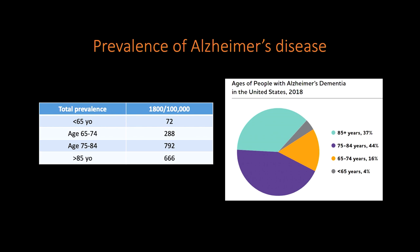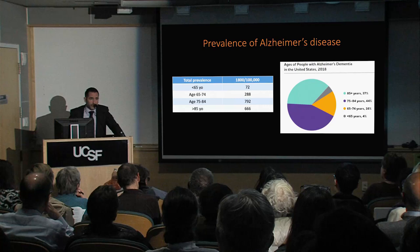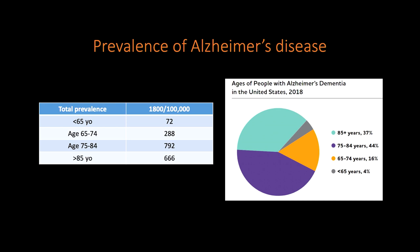You've all been exposed to the numbers for the Alzheimer's disease epidemic. The prevalence of Alzheimer's disease right now is about 1,800 per 100,000 people — approximately 5.8 million in the United States. This is probably an underestimate because many people never receive a formal diagnosis. The prevalence varies across the lifespan: in people under 65, only about 72 per 100,000; ages 65 to 74, about 300. The largest number of patients are in the 75 to 84 age group.